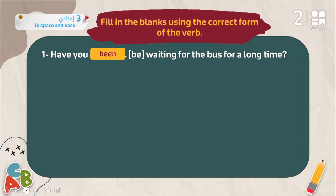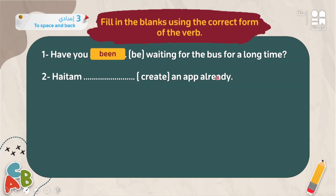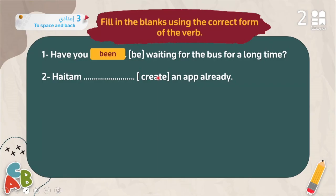Number two: 'Haytham ___ already ___ a space app.' The keyword 'already' signals the present perfect. Haytham takes 'has', and the past participle of 'create' is 'created', so the answer is: 'Haytham has already created.'